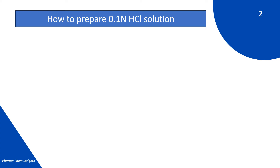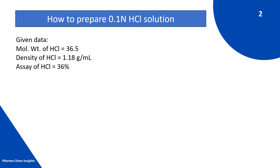How to prepare 0.1 normal HCl solution? Given data: molecular weight of HCl is equal to 36.5, density of HCl is equal to 1.18 g per ml, and specific assay (SA) of HCl is equal to 36%.